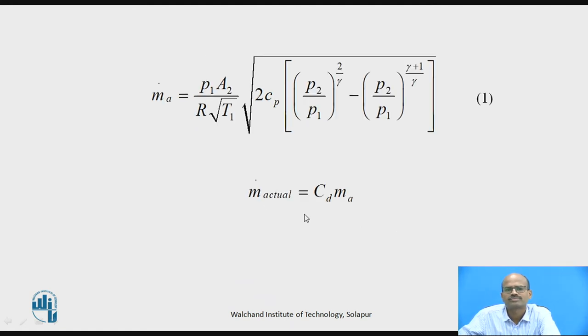Then you just go on reducing it. Then you will be getting the mass of air. Mass of air relation is equal to P1 A2 by R square root of T1 under square root of main square root of 2 Cp in the bracket P2 by P1 raised to 2 by gamma minus P2 by P1 raised to gamma plus 1 by gamma.